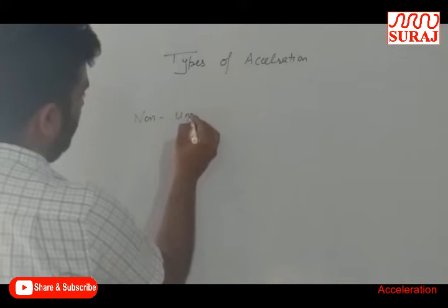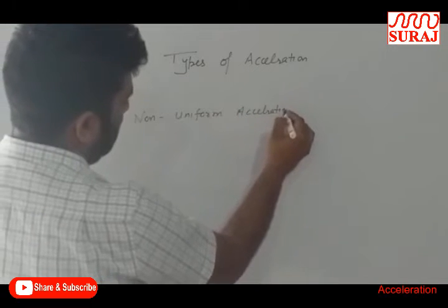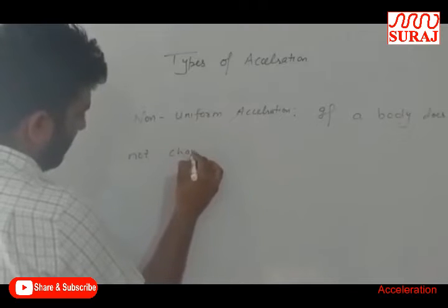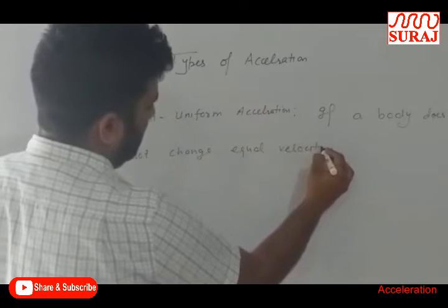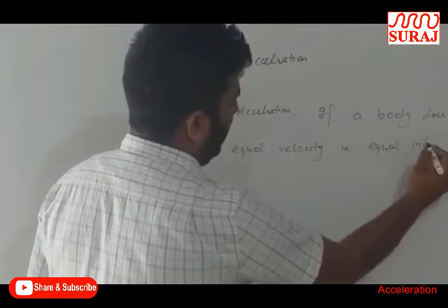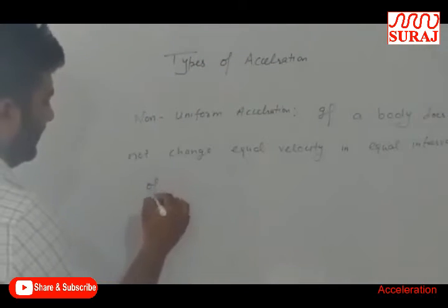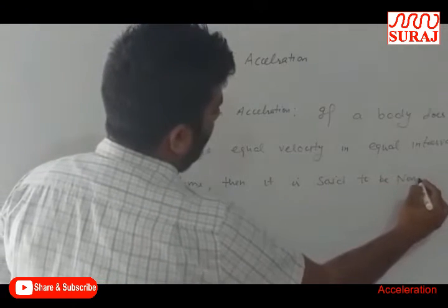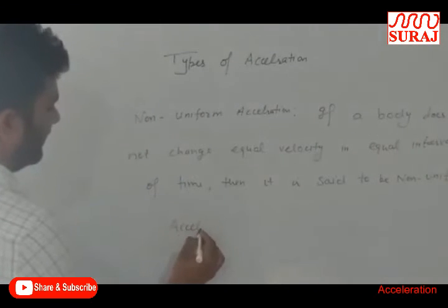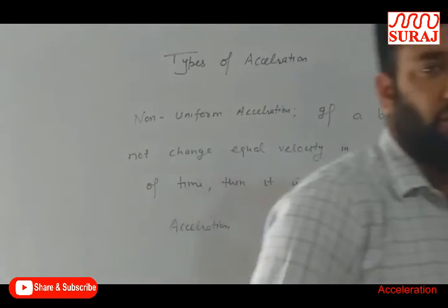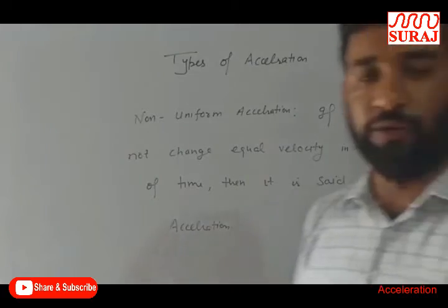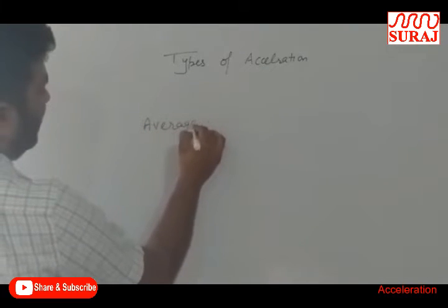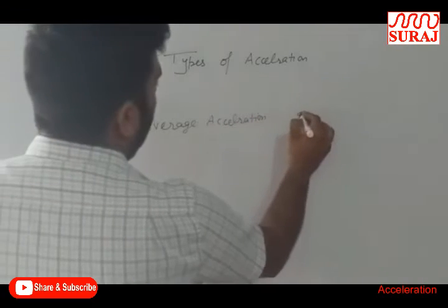The second type is non-uniform acceleration. If a body does not change its velocity by an equal amount in equal intervals of time, then it is said to be non-uniform acceleration.